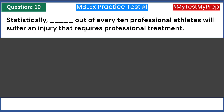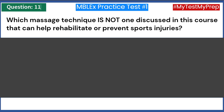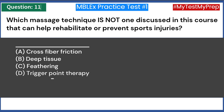Statistically, out of every 10 professional athletes, how many will suffer an injury that requires professional treatment? A) One. B) Two. C) Four. D) Six. Answer: B — two. Which massage technique is not one discussed in this course that can help rehabilitate or prevent sports injuries? A) Cross fiber friction. B) Deep tissue. C) Feathering. D) Trigger point therapy.